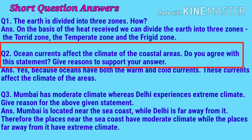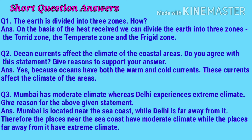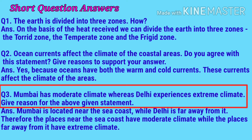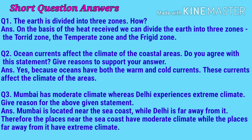Question number two: ocean currents affect the climate of coastal areas — do you agree? Give reasons. Yes, because oceans have both warm and cold currents, and these currents affect the climate of those areas. Question number three: Mumbai has moderate climate whereas Delhi experiences extreme climate — give reasons. Mumbai is located near the sea coast while Delhi is far away from it. Therefore places near the sea coast have moderate climate while places far away have extreme climate.